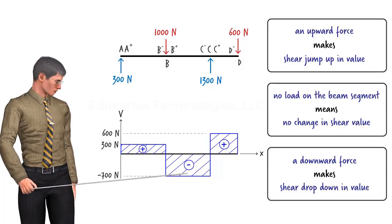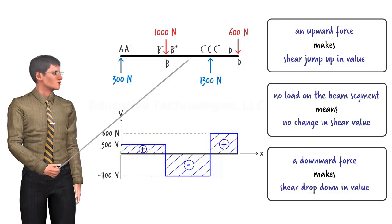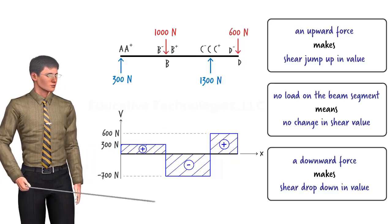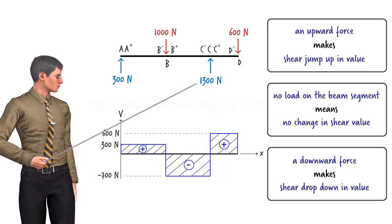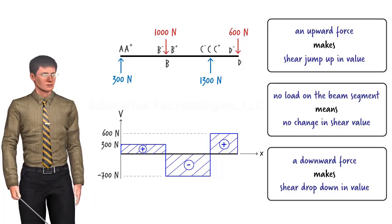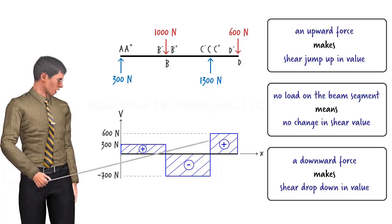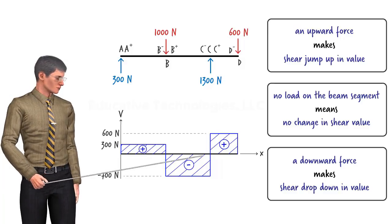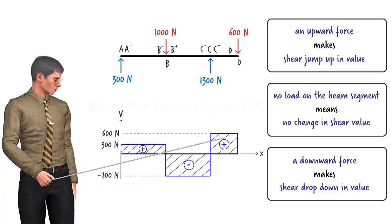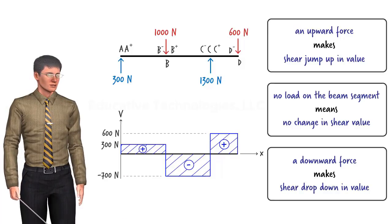Then shear remains constant between B+ and C-, since the segment is not subjected to any external loads. The upward reaction force of 1300 newtons at C causes an increase of 1300 units in shear — shear goes from negative 700 newtons at C- to positive 600 newtons at C+. Shear remains constant between C+ and D-, then at D, shear drops by 600 newtons to zero.